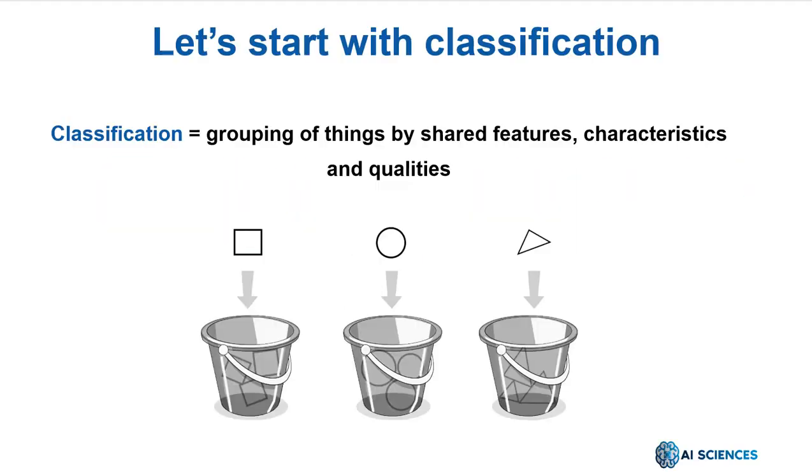First of all, what is classification? We can define classification as grouping things by the features, characteristics, and qualities they share. In other words, if you're about to drop various objects into three buckets, you could, for instance, classify geometric shapes based on their similarity. That is what classification actually means.